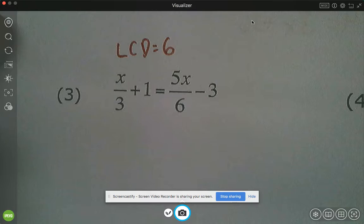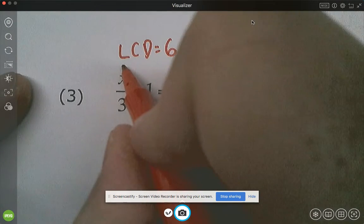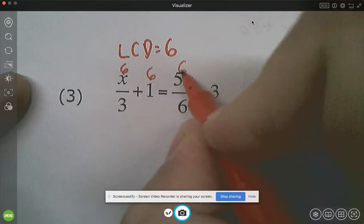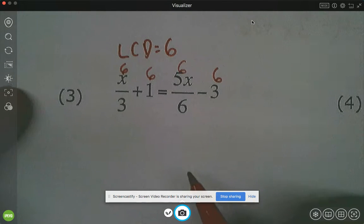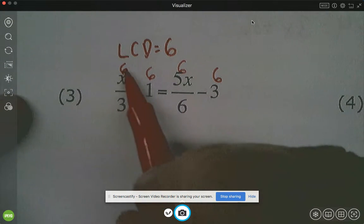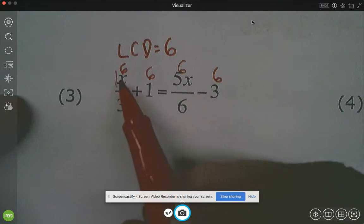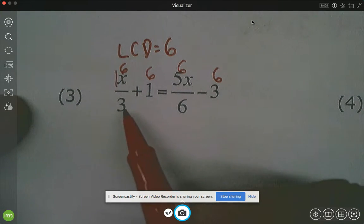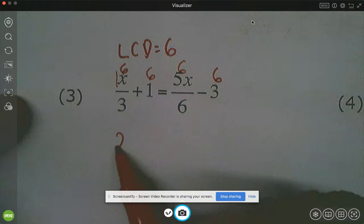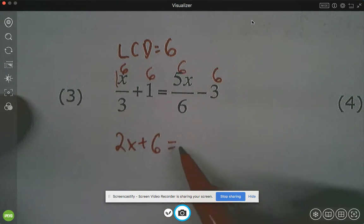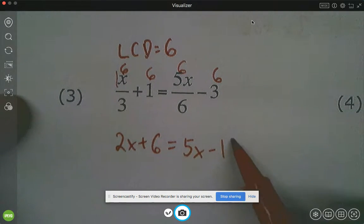So now we're going to multiply everything by 6. So we'll put little 6 above. Okay, so who wants to clear this fraction for me? So you will get 6 times an imaginary 1 is 6, divided by 3 is 2x, plus 6. And over here, what are you left with? 5x minus 18.